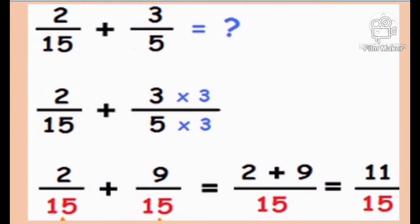How to add a dissimilar fraction? For example, 2 divided by 15 plus 3 divided by 5. All you have to do is get the LCD. 15 divided by 15 is 1, times 2 is 2. 15 divided by 3 times 3 is equal to 9. So 2 plus 9 is equal to 11, and the answer is 11 over 15.